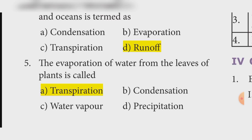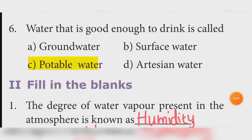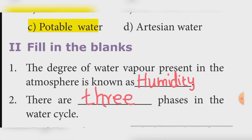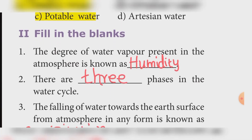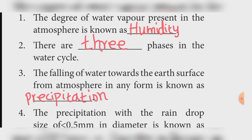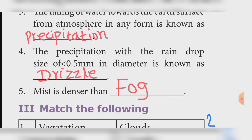Sixth: Water that is good enough to drink is called? Answer: Option C — Potable water. Fill in the blanks. First: The degree of water vapor present in the atmosphere is known as Humidity. Second: There are three stages in the water cycle. Third: Falling of water towards the Earth's surface from the atmosphere in any form is known as Precipitation. Fourth: The precipitation with raindrop size of 0.5mm diameter is known as Drizzle. Fifth: Mist is denser than Fog.